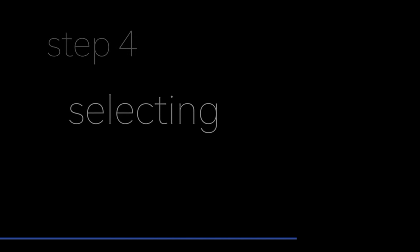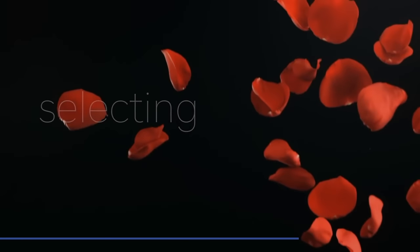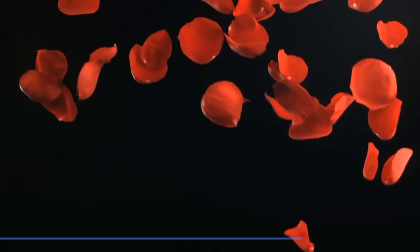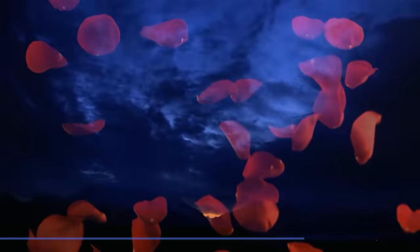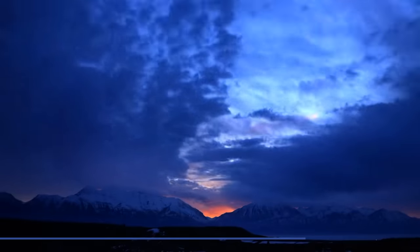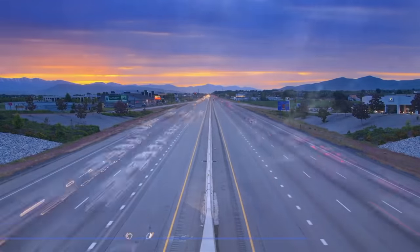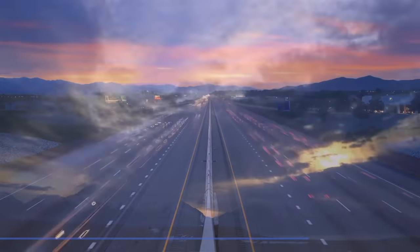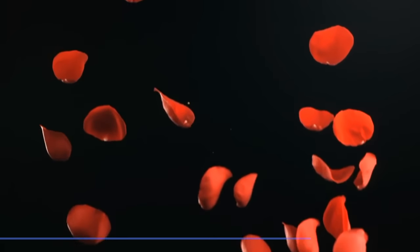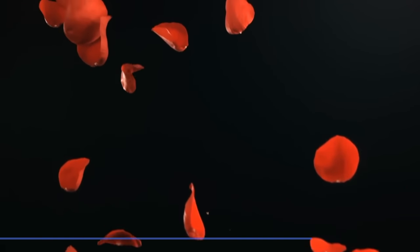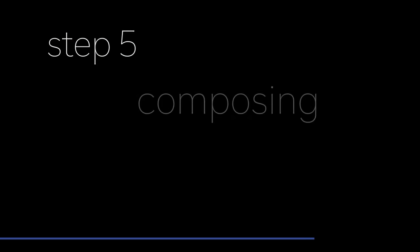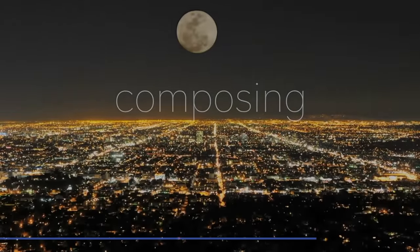Moving on to number four: selecting. You can't compose a film without first making selections, but every selection you make changes the film you are making. If you select one thing that's really good and then select another thing that's really good, and you put them together and they don't really work, you go back and select something different. What's the last thing an editor literally does? Composing — it's when you put all the shots together.